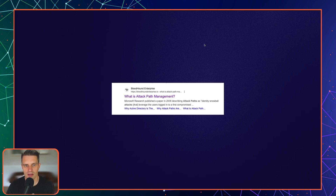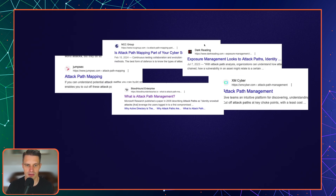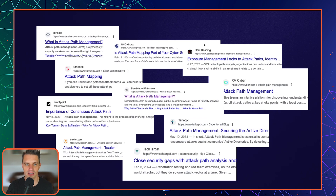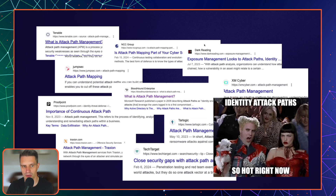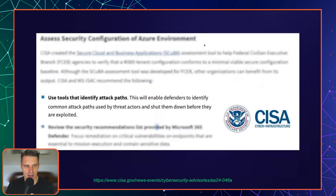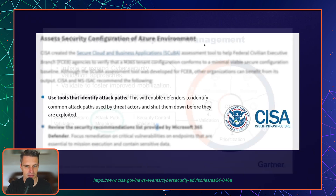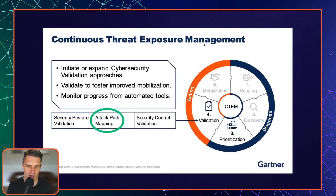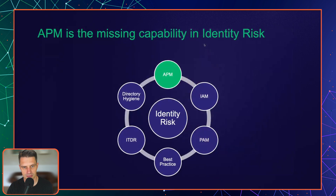Andy Robbins created the attack path management manifesto in 2021, and since then the industry has responded — we understand this is a key issue for most organizations today. CISA recommends that organizations use tools to identify attack paths and shut them down before an attacker can use them. Gartner includes attack path mapping as a key consideration in their continuous threat and exposure management process. We believe attack path management is the missing capability in your identity risk strategy.